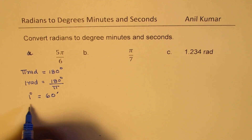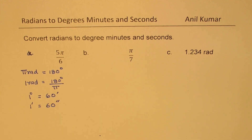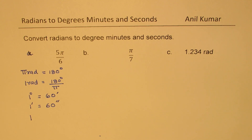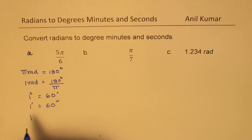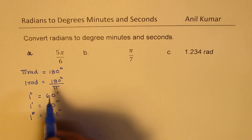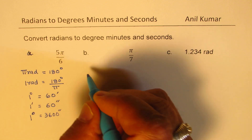We're also talking about minutes and seconds. One degree is equal to 60 minutes, and one minute is equal to 60 seconds. You could also write that one degree equals 3600 seconds. These are the conversion factors you can use for any conversion between degrees, minutes, and seconds from radians.